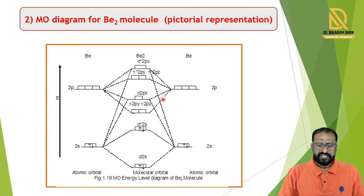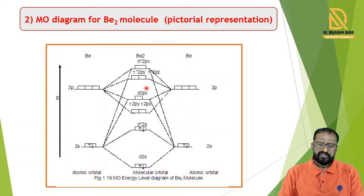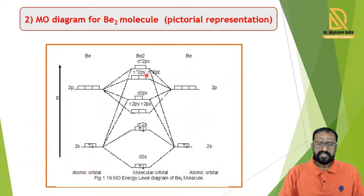In the increasing energy levels, we write: sigma 2s, sigma* 2s, pi 2py = pi 2pz, then sigma 2px, then sigma* 2px, pi* 2py and pi* 2pz (both having the same energy), and then the highest energy level, sigma* 2px.